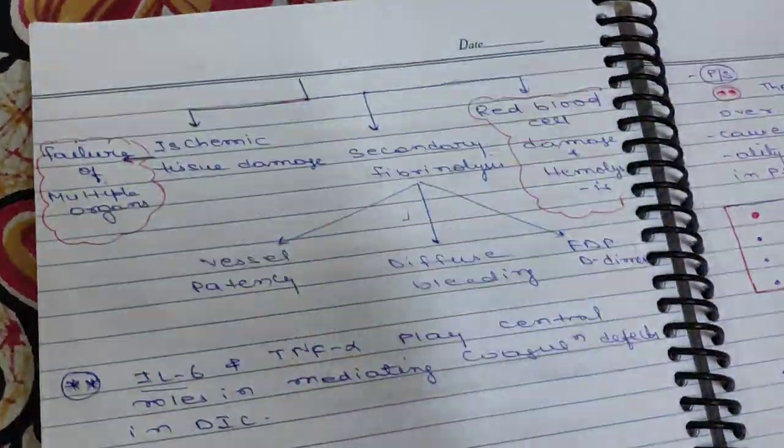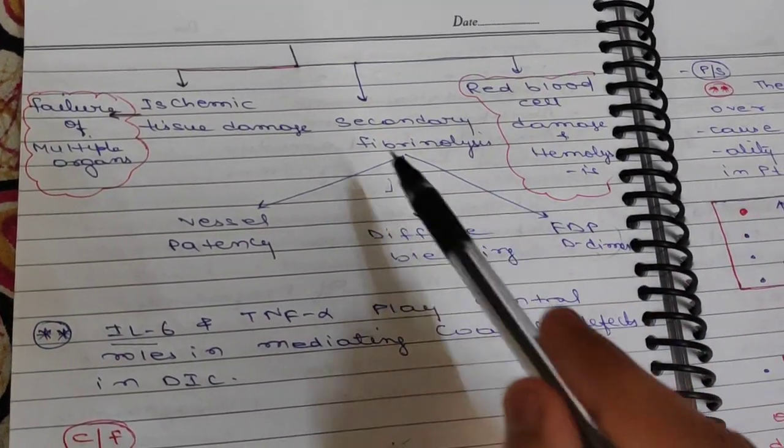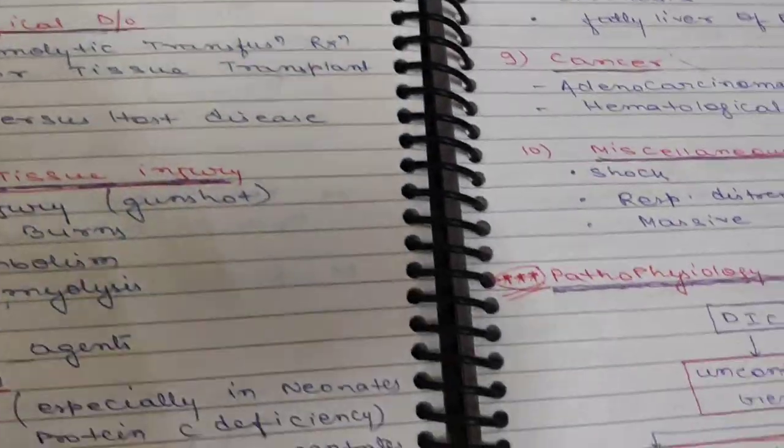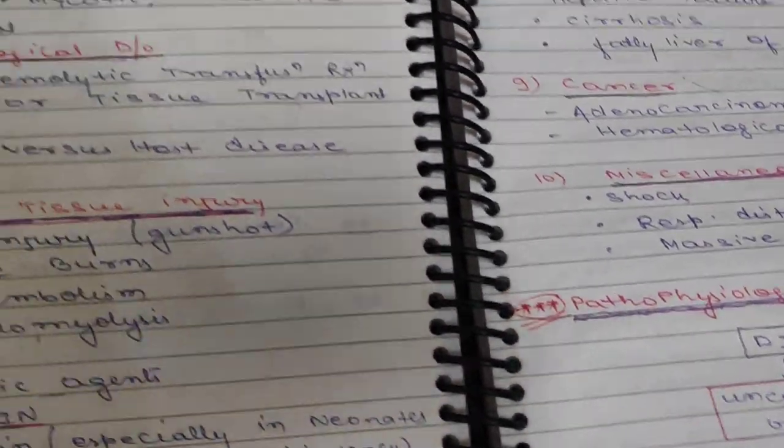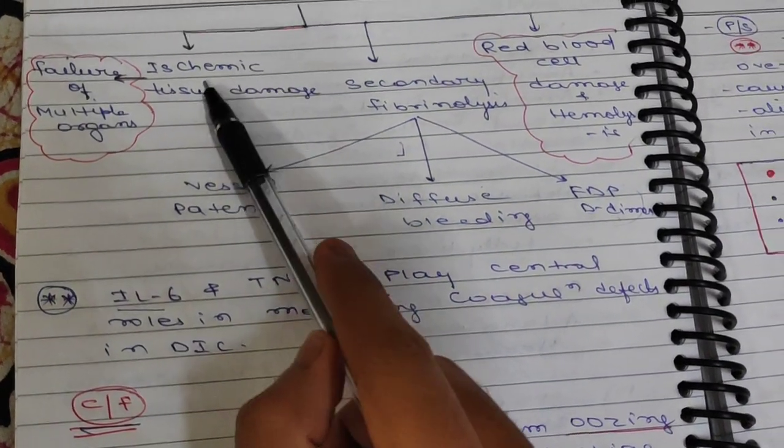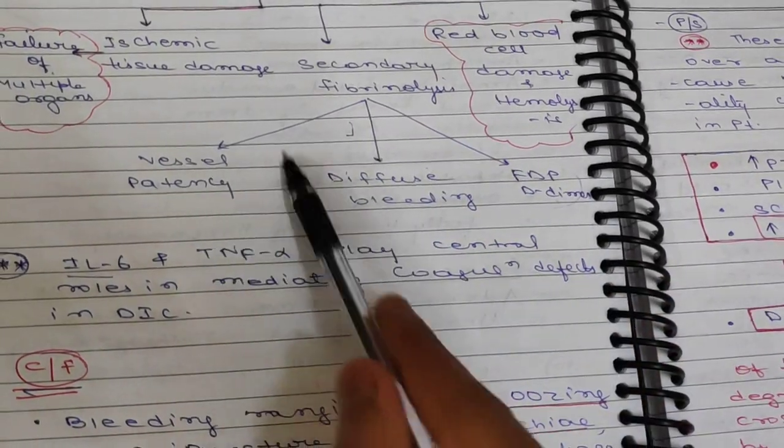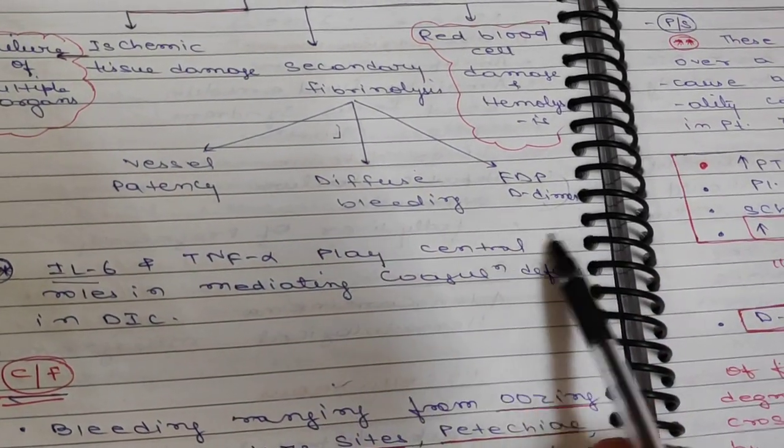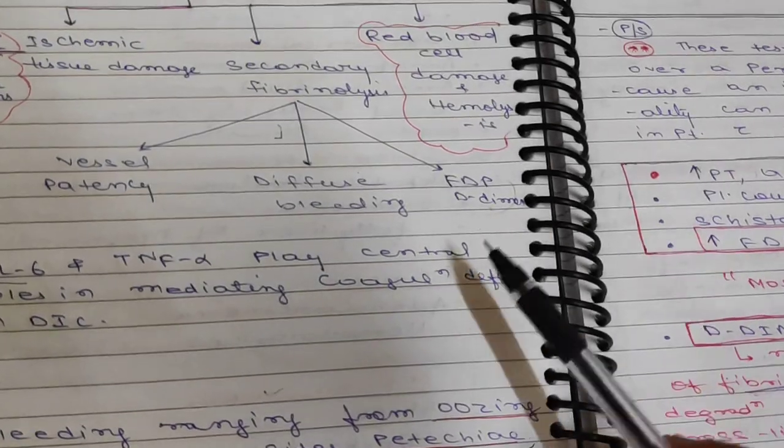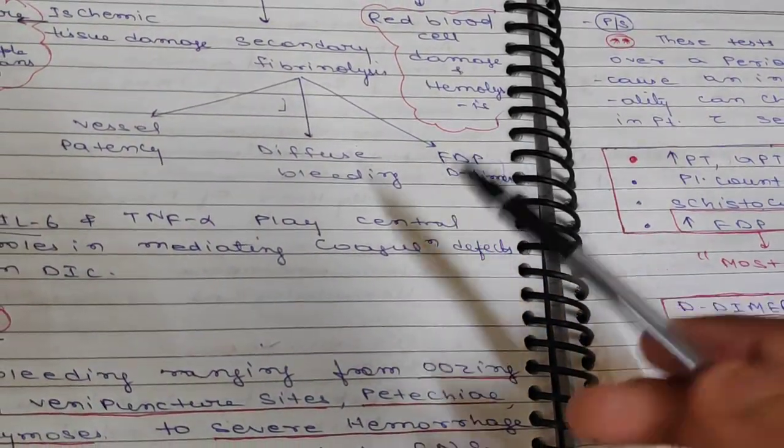As we discussed, fibrin deposits in microcirculation may lead to ischemic tissue damage, which causes failure of multiple organs. Secondary fibrinolysis will start, leading to vessel patency, diffuse bleeding, and elevated FDP or D-dimer. Red blood cell damage and hemolysis will occur due to DIC.